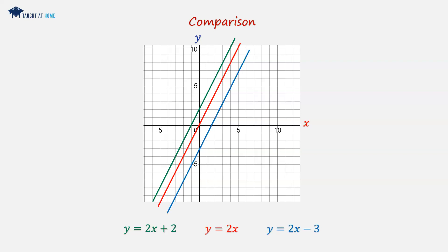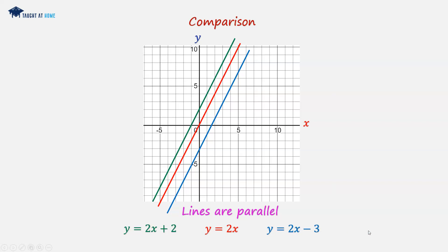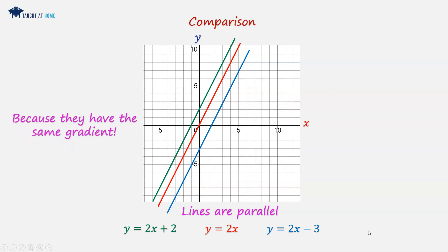What do you notice about these lines? They are, in fact, parallel lines. And we know they're parallel lines without drawing them, because they have in common the same gradient. So lines that have the same gradient are parallel — bear that in mind for later on.